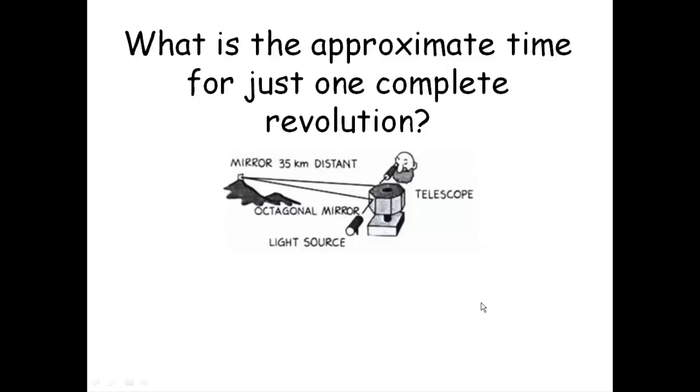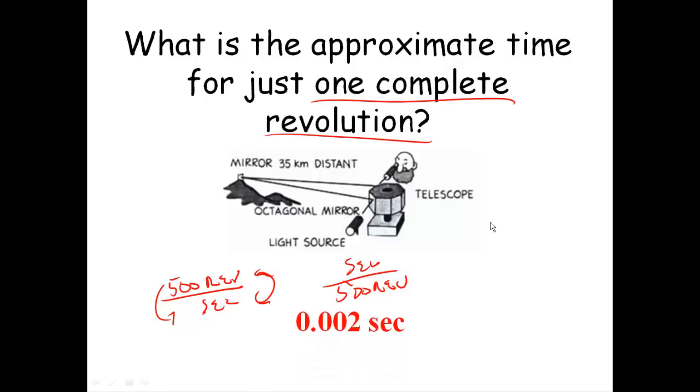Next, what he did, he took the 500 revolutions per second, and he had to figure out how many seconds for one revolution. So, basically, the units have been flipped, and therefore, the numbers have been flipped. So, it's some number of seconds per 500 revolutions, so 1/500th, which is 0.002 seconds.